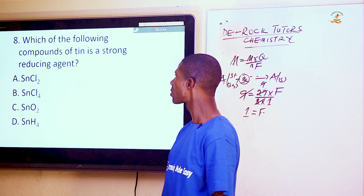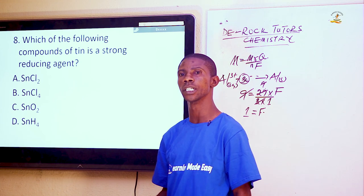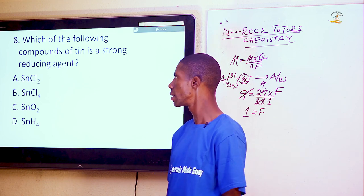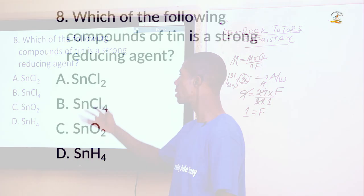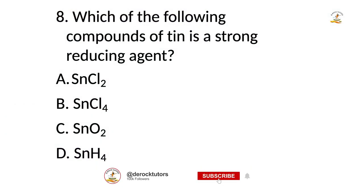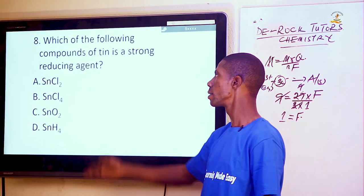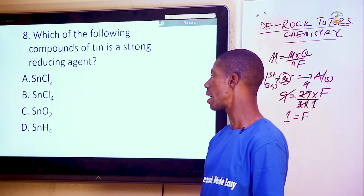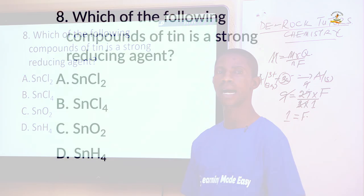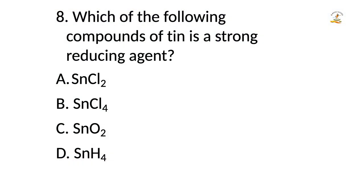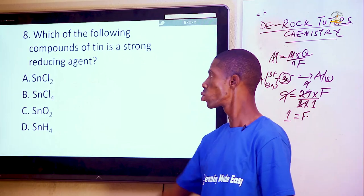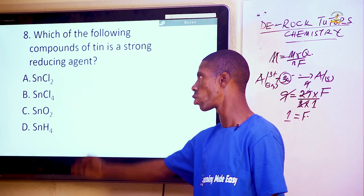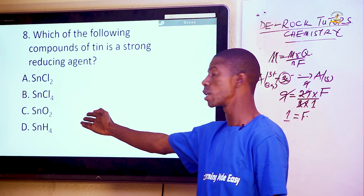Question 8: Which compound of tin is a strong reducing agent? Tin is a metal, and we consider tin(II) chloride, tin(IV) chloride, tin dioxide, and tin tetrahydride. The hydride of tin acts as a reducing agent. So the answer is tin tetrahydride, which is option D.